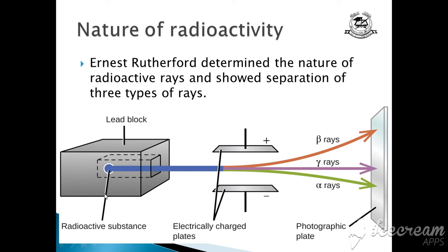This is a lead block and this is a radioactive substance kept between two oppositely charged plates in an electric field. This is positively charged and this is negatively charged. These are two metal plates that are oppositely charged, producing an electric field.